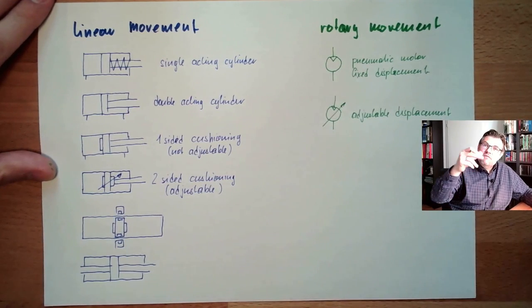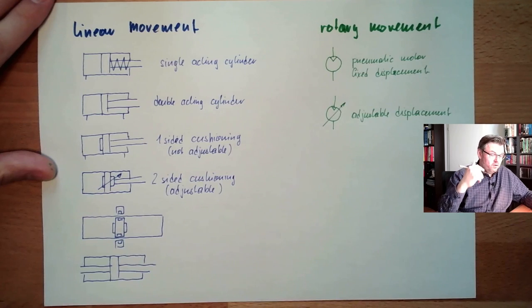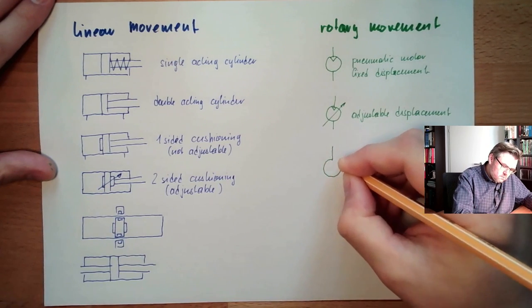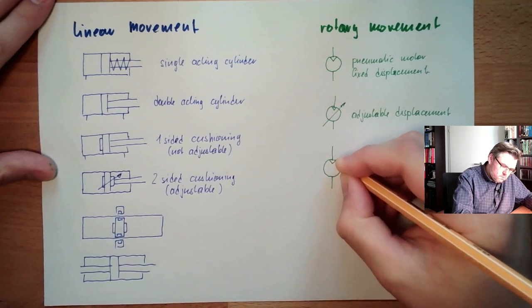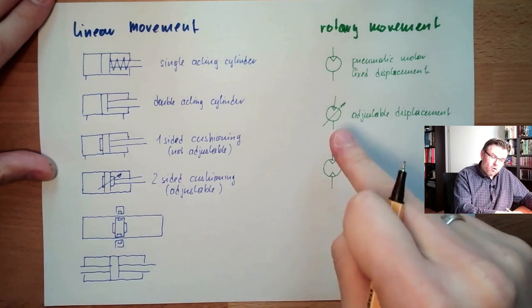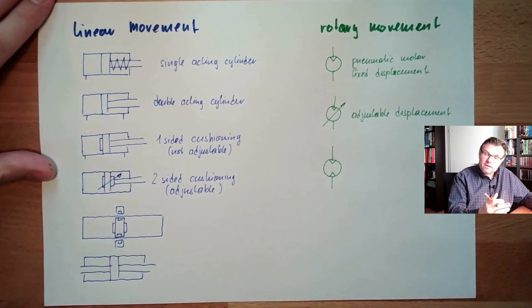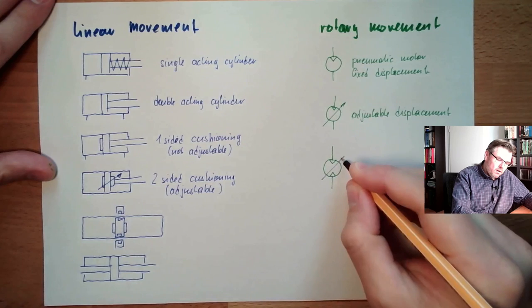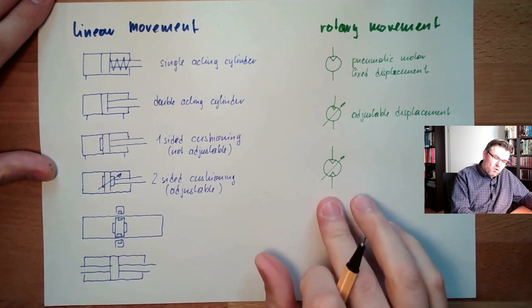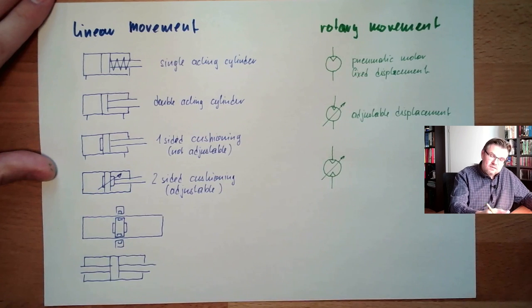However, one direction, if I can also change the direction of the motor, so if the motor can turn left and can turn right, the symbol would look like this. Now, I can go through the motor in either way. It will turn left, turn right, doesn't really matter. And now, it's even adjustable displacement. So this motor can turn left and right with different speeds.